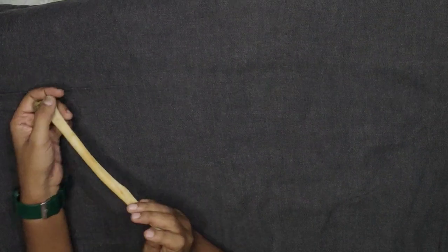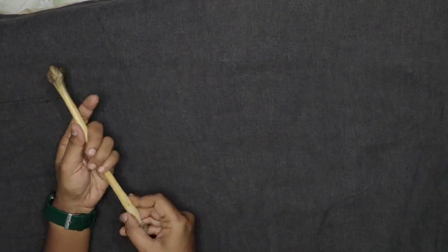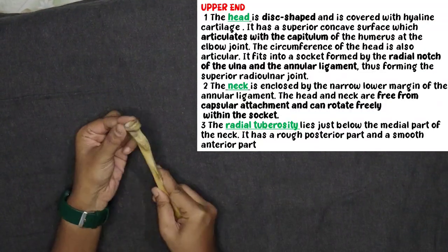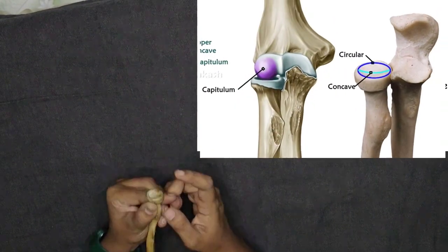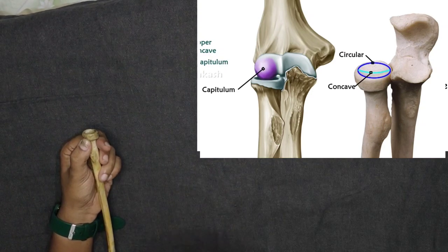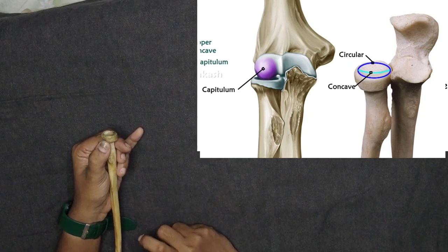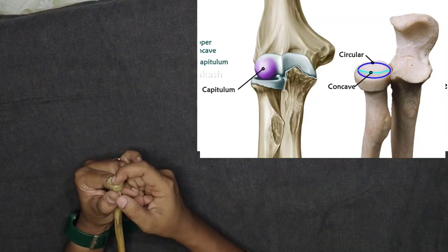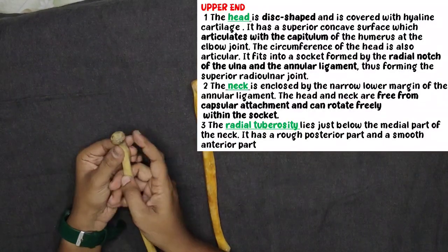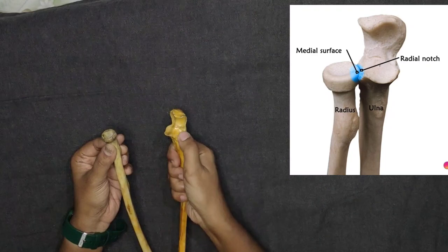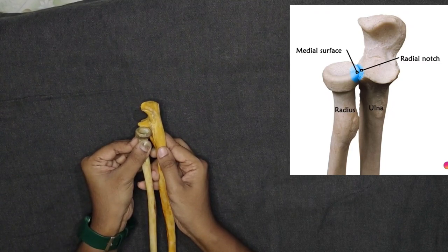Now coming to the features. The upper end: the head is disc-shaped. On this disc, there is a concavity on top which articulates with the capitulum of the humerus. The capitulum is the rounded structure on the humerus. The disc of the radius articulates down onto the capitulum, forming the joint.